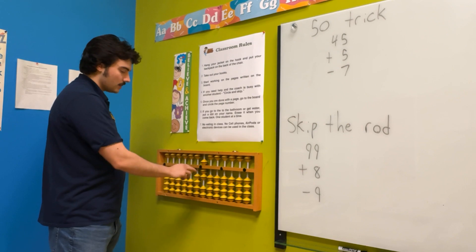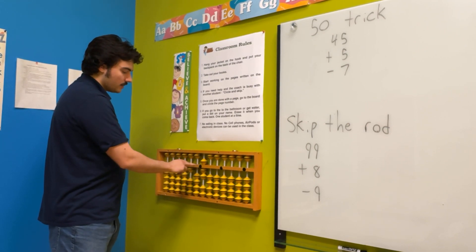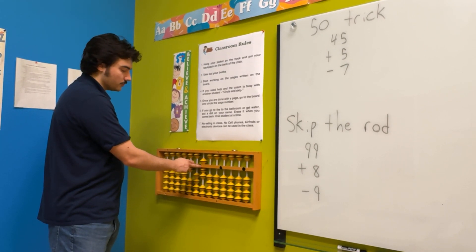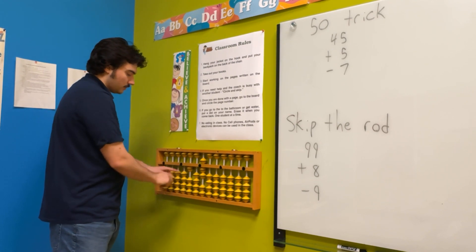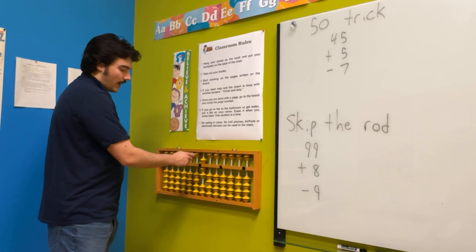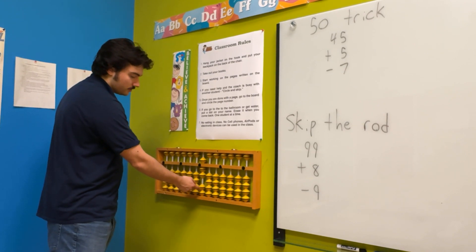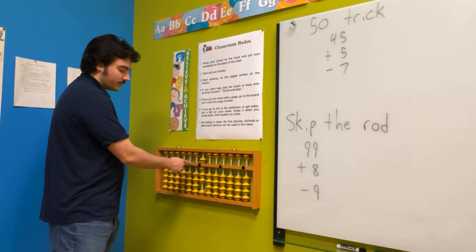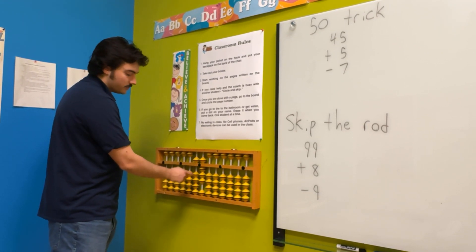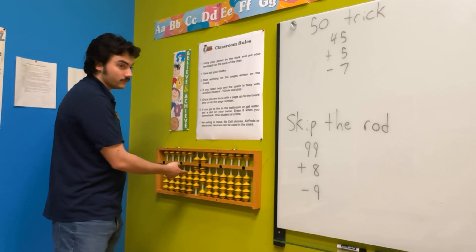Now we want to take away nine. We can't take away nine here, and there's nothing to take away here. So again, we're going to skip the rod, take away the hundred. Then we're going to add the big buddy of nine, which is one here. Then that rod that we skipped this time, we're going to put everything back the way it was, giving us our answer.